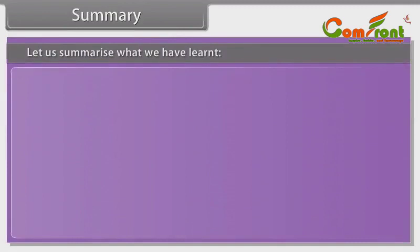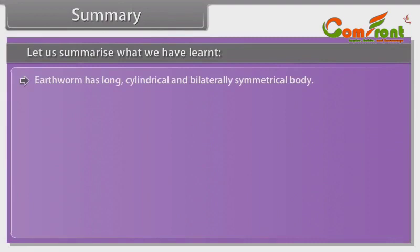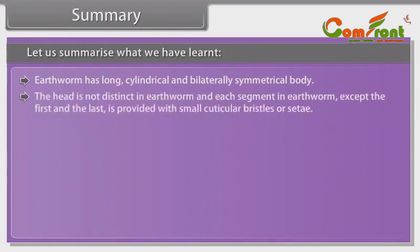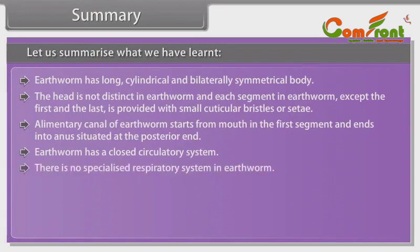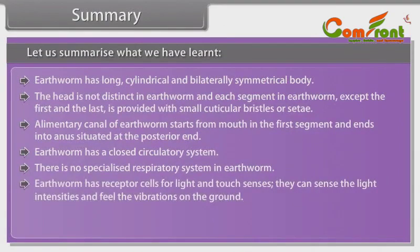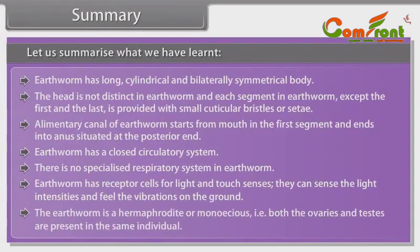Summary: Earthworm has a long, cylindrical and bilaterally symmetrical body. The head is not distinct, and each segment except the first and the last is provided with small cuticular bristles or setae. The elementary canal starts from the mouth in the first segment and ends at the anus at the posterior end. Earthworm has a closed circulatory system, no specialized respiratory system, and receptor cells for light and touch. The earthworm is a hermaphrodite or monoecious — both ovaries and testes are present in the same individual.